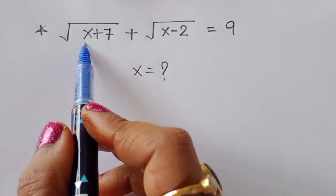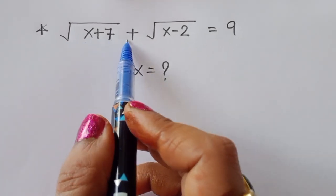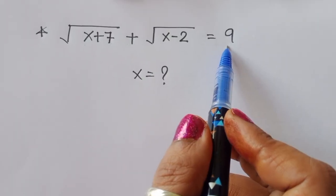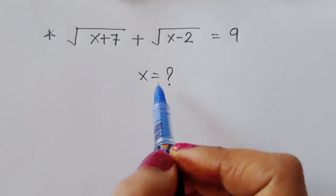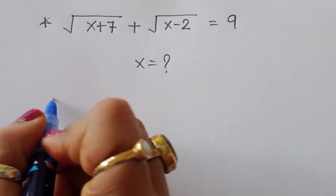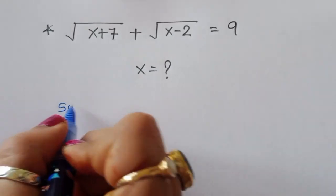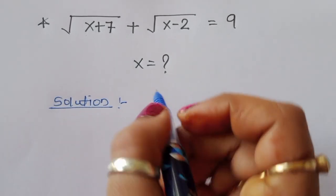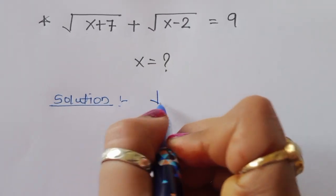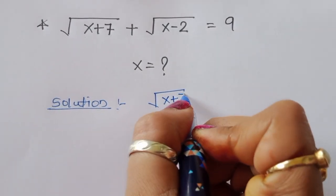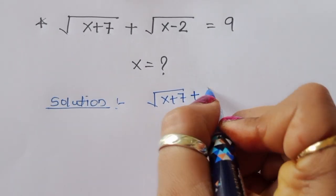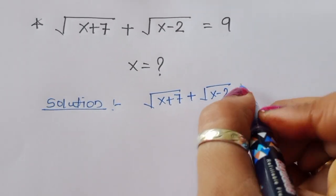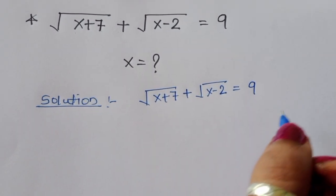The question is: given √(x+7) + √(x-2) = 9, we have to find out the value of x. Let's see the solution. √(x+7) + √(x-2) = 9 — this is given.